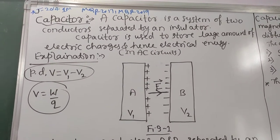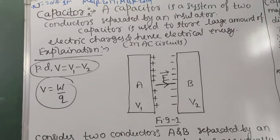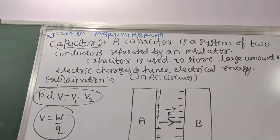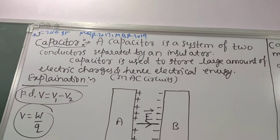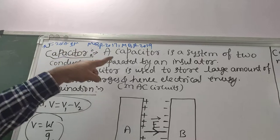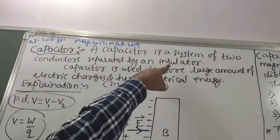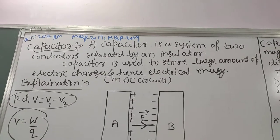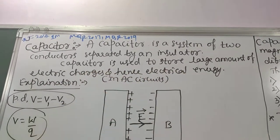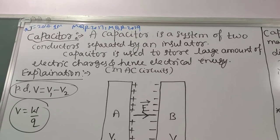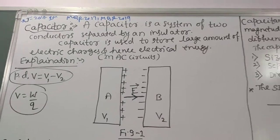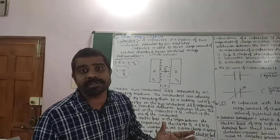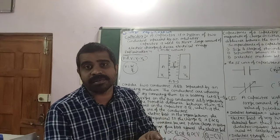A capacitor is a system of two conductors separated by an insulator; insulator refers to a dielectric substance. A capacitor is used to store a large amount of electric charges and hence electrical energy. We can say a capacitor is a bank of charges.